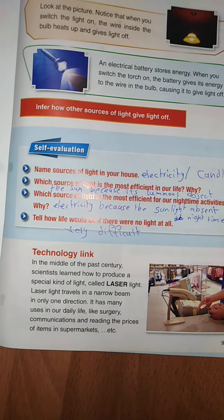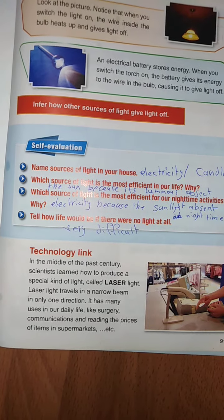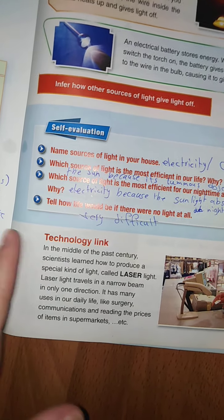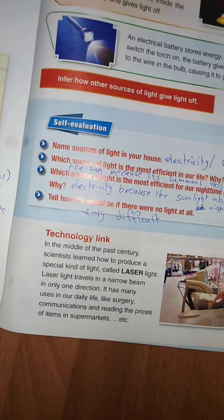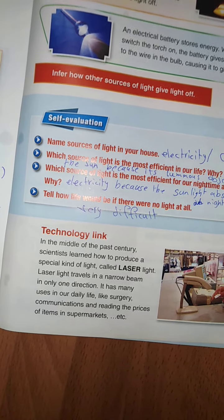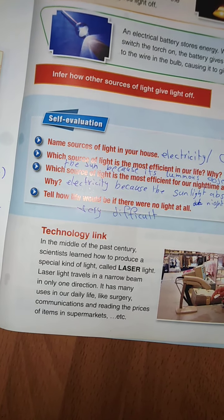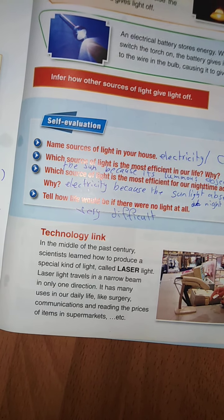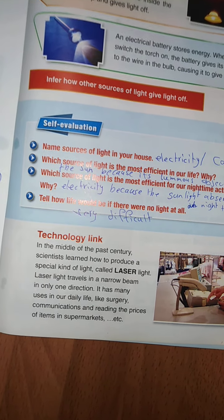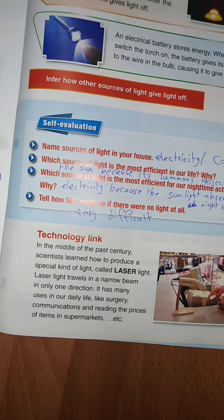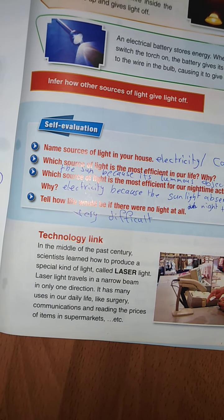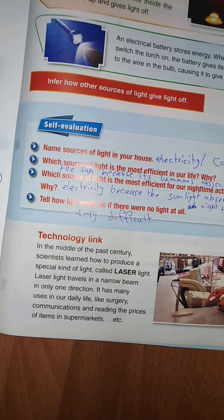We will read the paragraph: in the middle of the past century, scientists learned how to produce a special kind of light called laser light. Laser light travels in a narrow beam in only one direction.